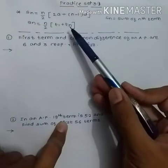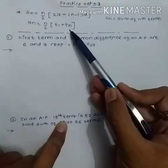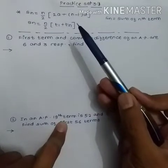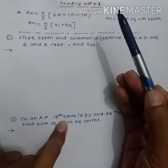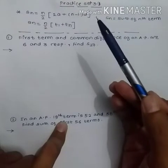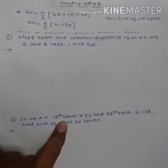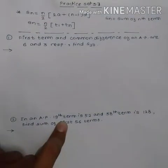The second formula is Sn = n/2 × (t1 + tn), where n is the number of terms, t1 is the first term, and tn is the nth or last term. When the first term and last term are given in the question, we use this second formula.